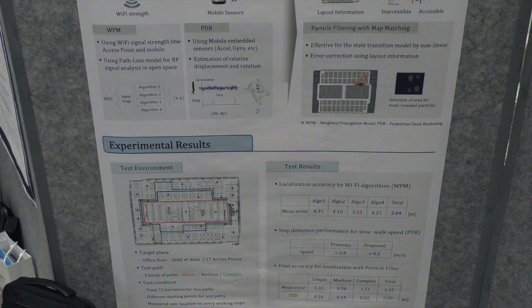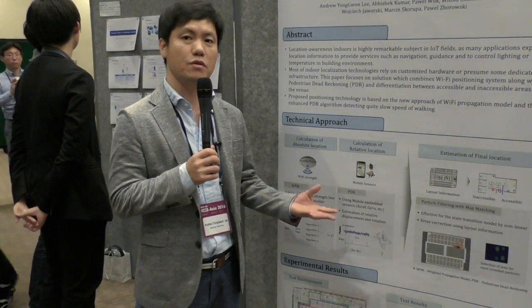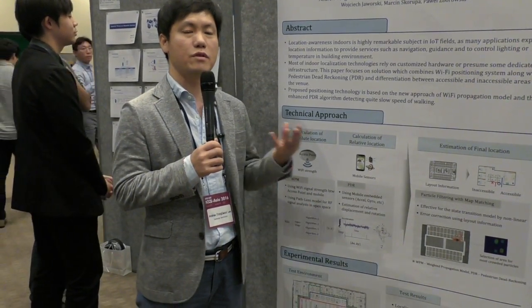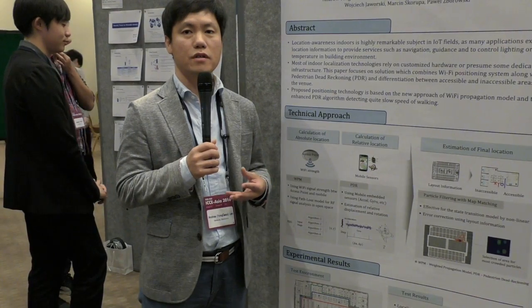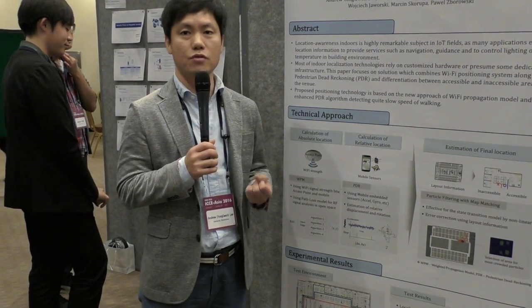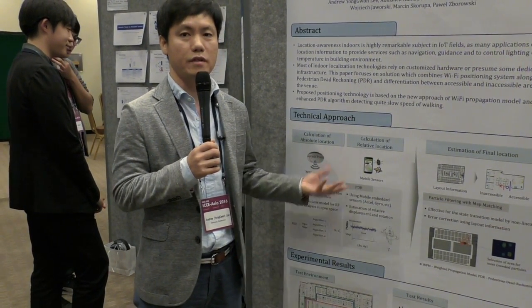We tested many kinds of test paths and obtained good results. We can secure around one meter accuracy for user localization in the building.